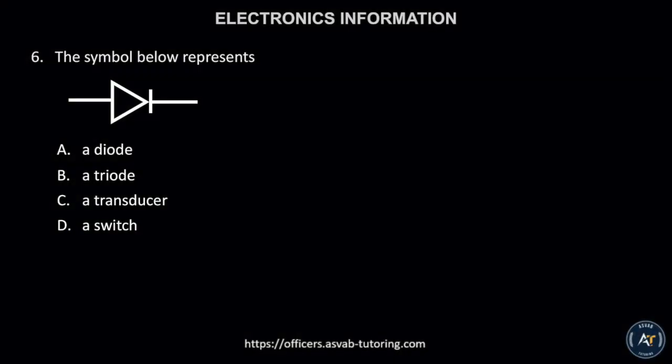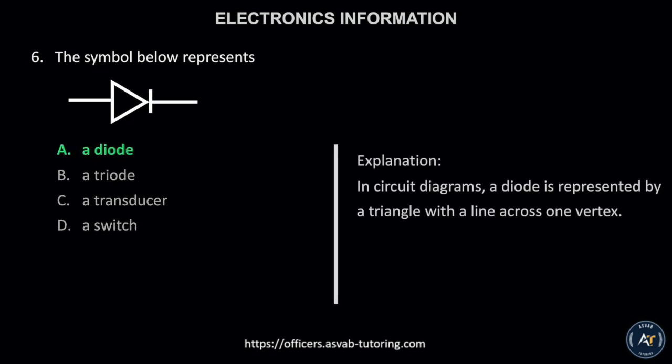Number 6. The symbol below represents: A. A diode, B. A triode, C. A transducer, or D. A switch. The correct answer is letter A, a diode. In circuit diagrams, a diode is represented by a triangle with a line across one vertex.